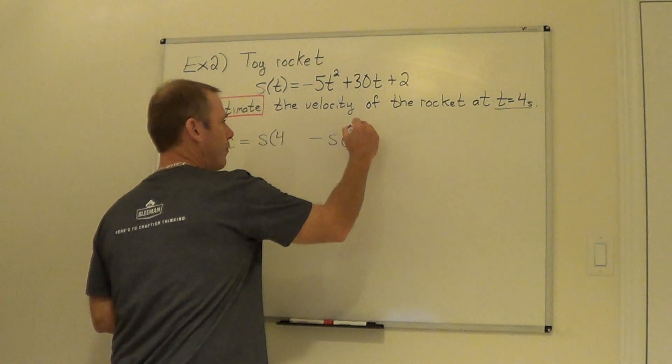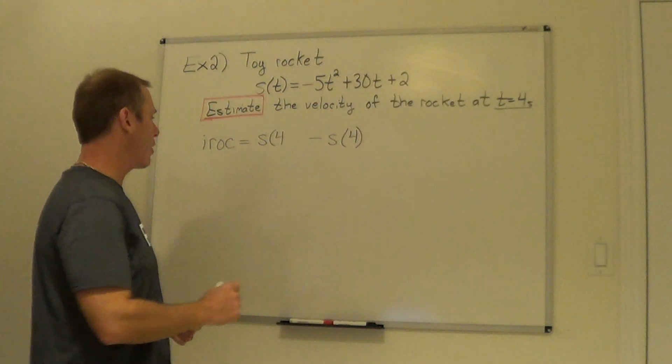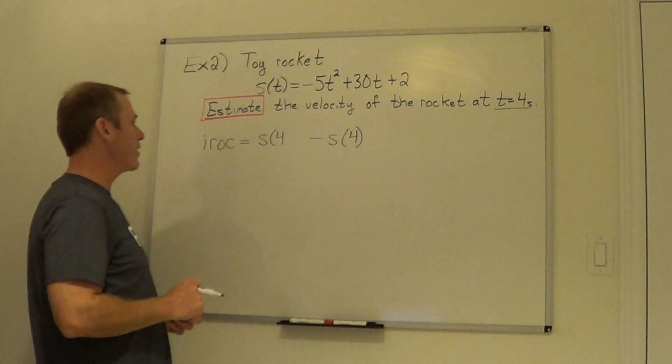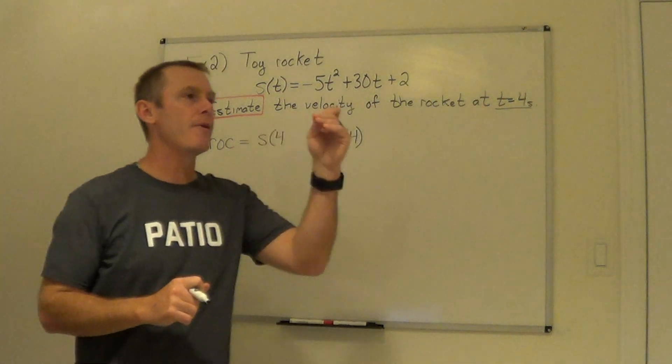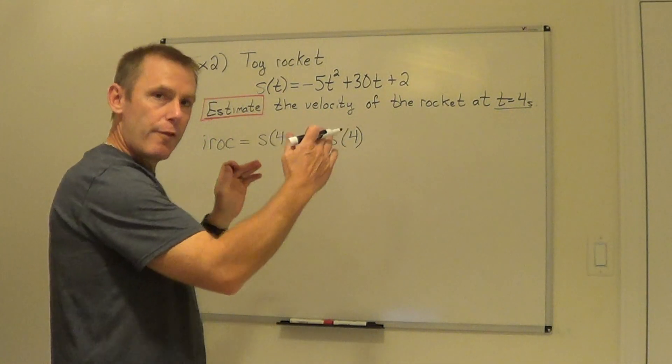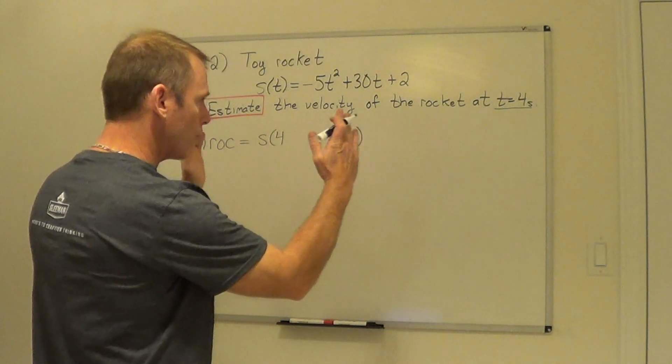So our s of 4 is going to be our y1, now our y2 is because I'm estimating, I'm going to pick some value that's just slightly above 4. With our instantaneous rate of change, we are finding the slope at 1 point but really we're doing 2 points.